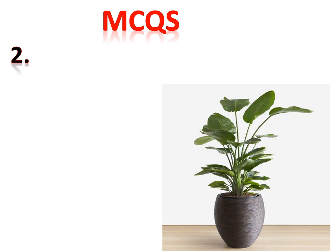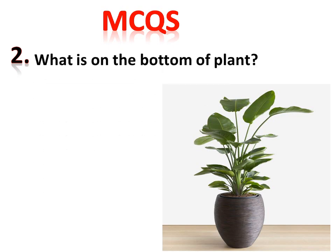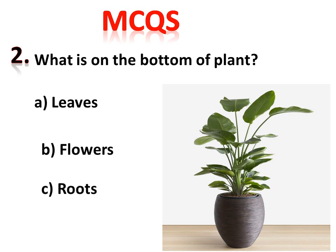MCQ number two: what is on the bottom of the plant? The bottom means the lower part. Option A is leaves, B is flowers, and C is roots. The correct answer is roots — roots are at the bottom of the plant, found in the soil, where they absorb water and minerals.